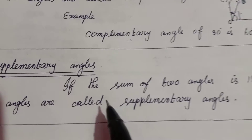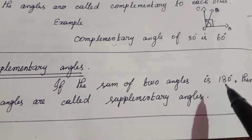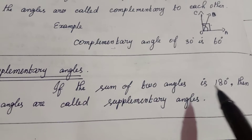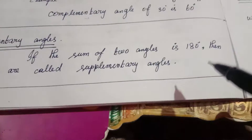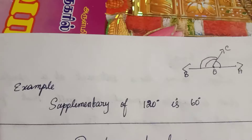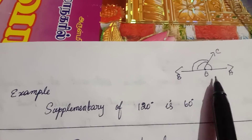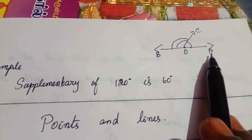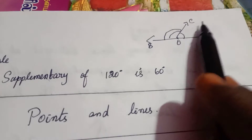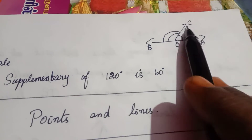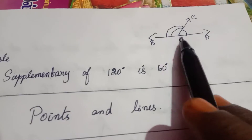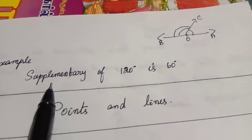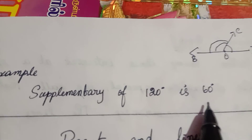Next is supplementary angles. If the sum of two angles is 180 degrees, then the angles are supplementary angles. This is a straight angle — 180 degrees — divided into two parts: angle AOC and BOC. The sum of these two angles is 180 degrees, so these are supplementary angles. For example, the supplementary angle of 120 degrees is 60 degrees.